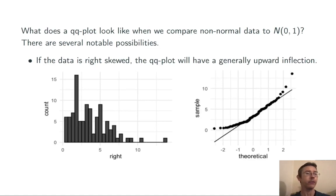If the data is right-skewed, then the QQ plot generally has an upward inflection, like we're seeing here. In this example, I've drawn some data from a chi-squared distribution, and then done a QQ plot comparing it to a normal distribution. And you can see that it rises upward from the line at both ends of the spectrum.